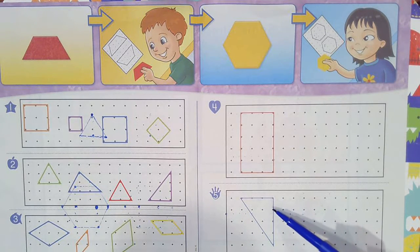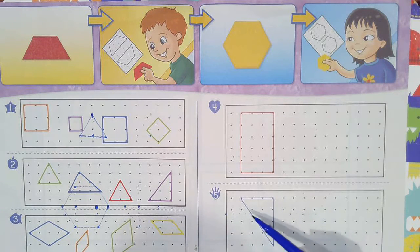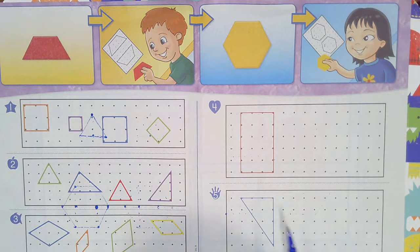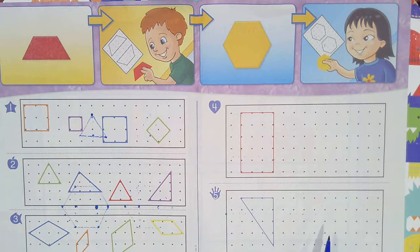And then you would count these ones going down. And then you would connect those two. And that should give you the same shape and same size.